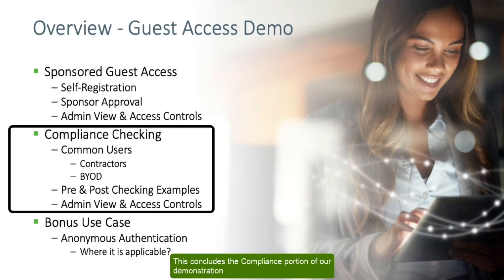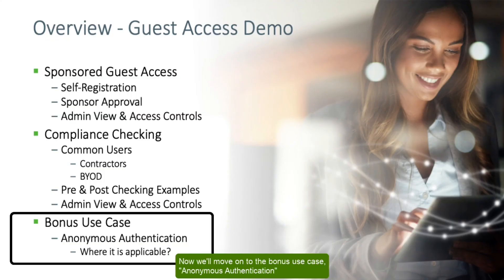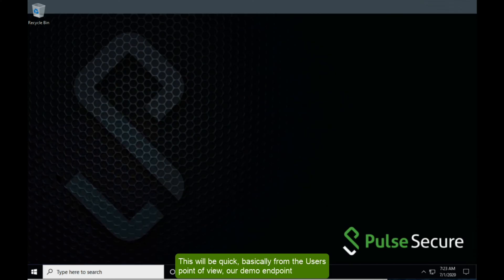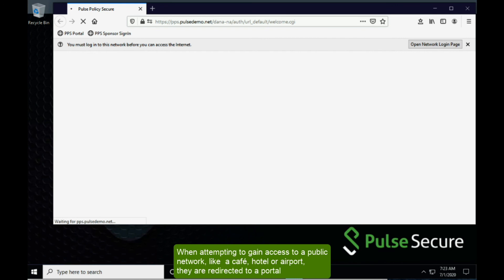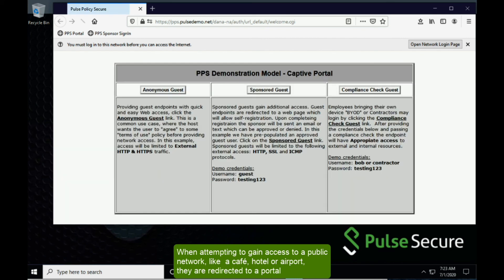This concludes the compliance portion of our demonstration. Now, we will move on to the bonus use case: anonymous authentication. This will be quick. Basically, from the user's point of view, when attempting to gain access to a public network like a cafe, hotel, or airport, they are redirected to a portal.